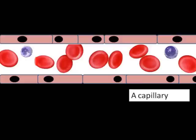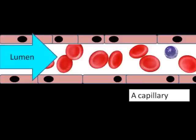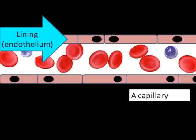To start with, we need to look at the blood vessels themselves. So here is a capillary. The cells and the fluid are in the lumen, and then that is surrounded by a very thin layer of cells called the endothelium, made of endothelial cells.